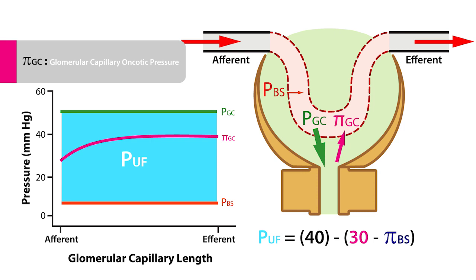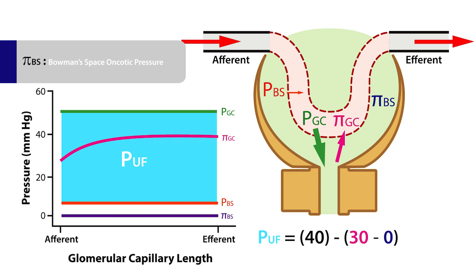This occurs because as the ultrafiltrate moves into the Bowman space, the nonpermeable solutes within the glomerular capillary become more concentrated as the filtrate moves along the glomerular capillary. The final force is the Bowman space oncotic pressure, abbreviated as PIBS, and under normal physiological conditions it is zero, because proteins and other nonpermeable solutes are not filtered.